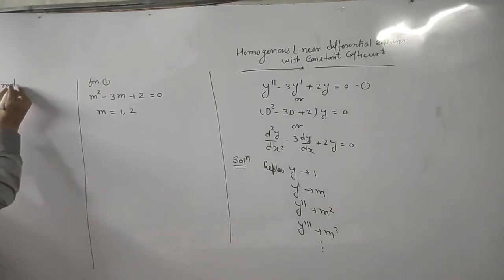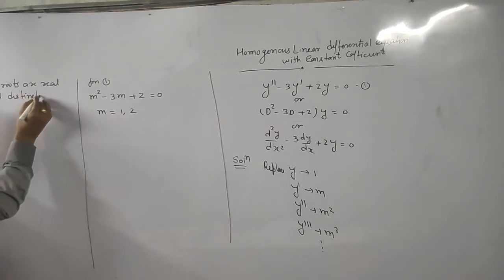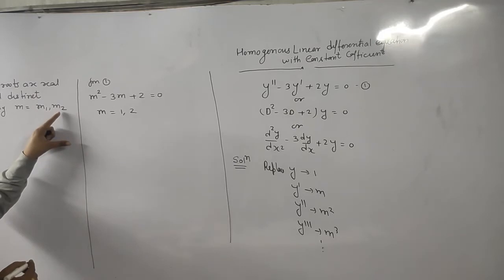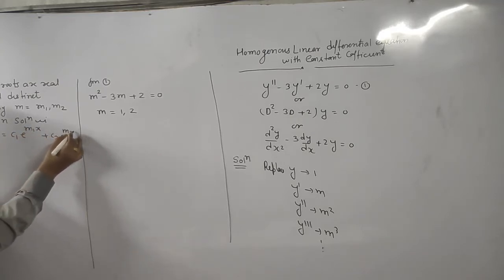If roots are, case first, real and distinct. Then, say, m is equal to m1, m2. We have two roots. One root is m1, one root is m2. Then, solution is y is equal to c1 e to the power m1x plus c2 e to the power m2x.